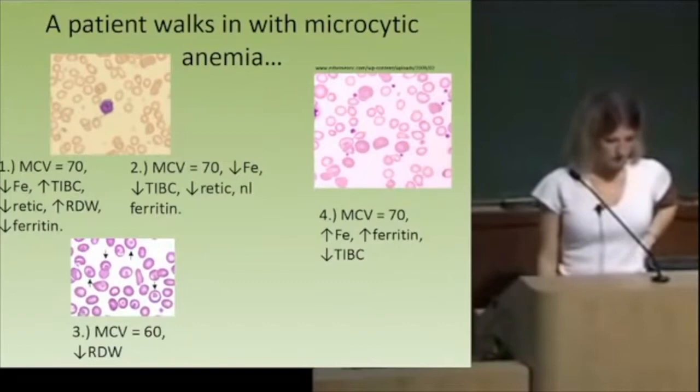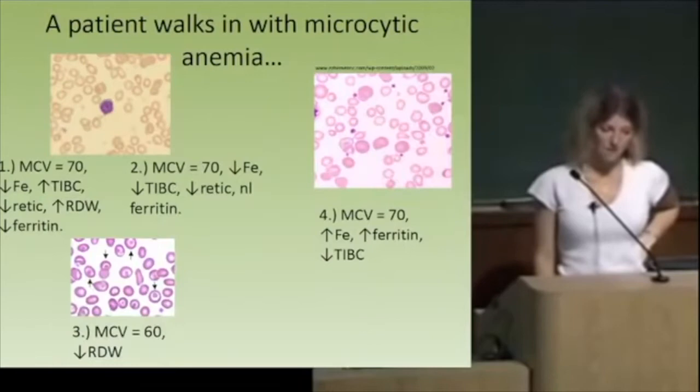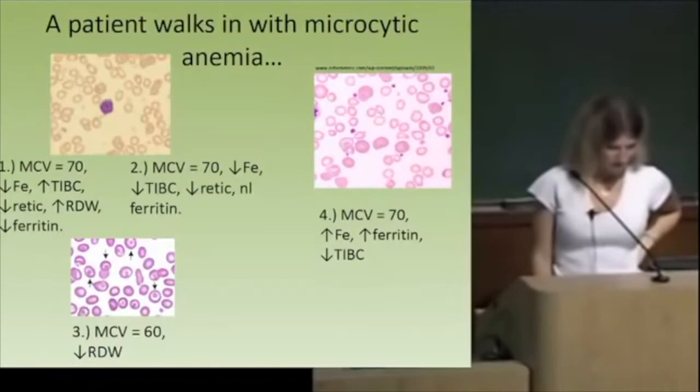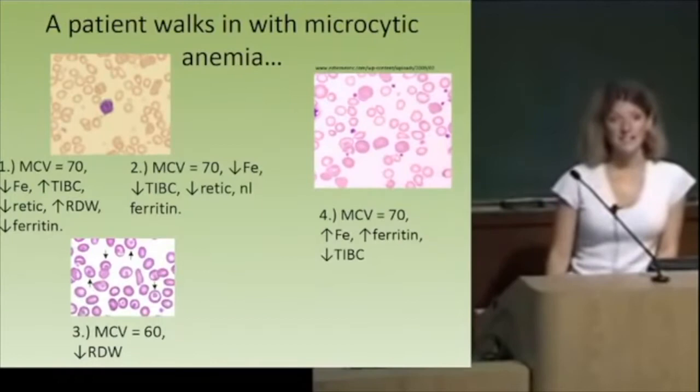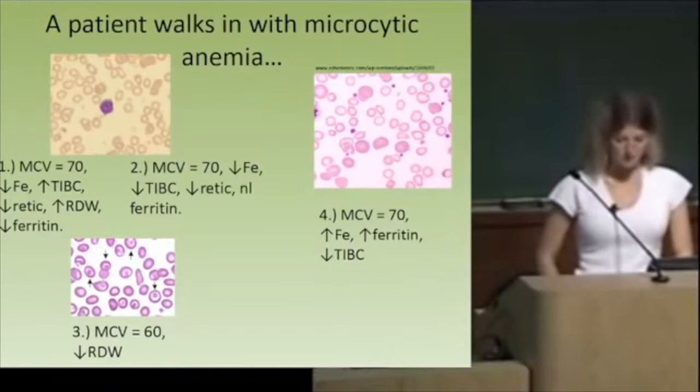So what about this microcytic case — MCV of 70? The iron is actually high, low TIBC, high ferritin, and this smear. It's sideroblastic anemia. You'll see ring sideroblasts in the bone marrow, which we can't see on the smear. Other things that might help in the clinical vignette: isoniazid can cause sideroblastic anemia, so they might tell you the patient was on INH for tuberculosis.